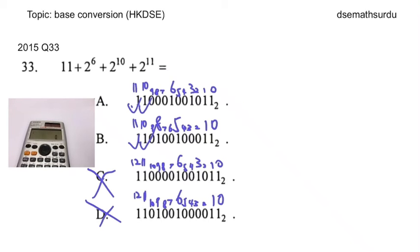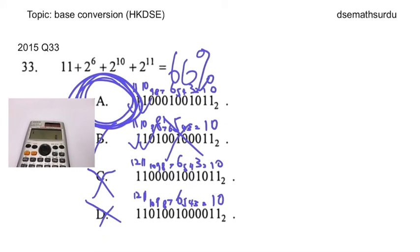You already get the answer. This is also wrong, that should be A. Actually 66 percent of students got it correct, so you should be among them as well. That's all.